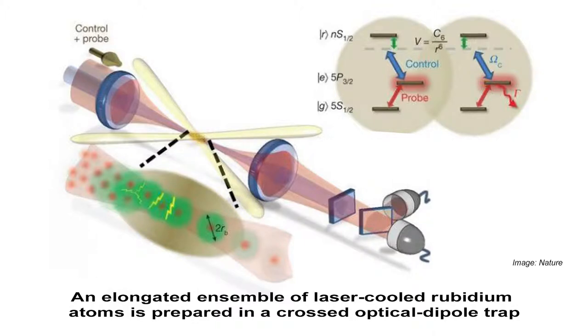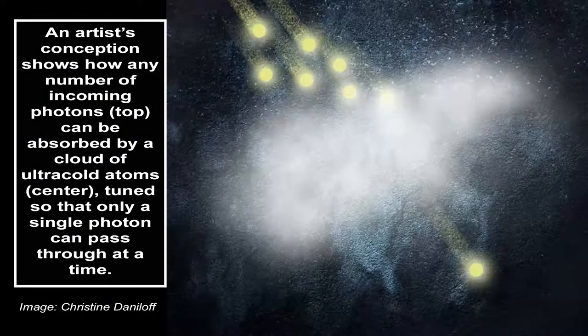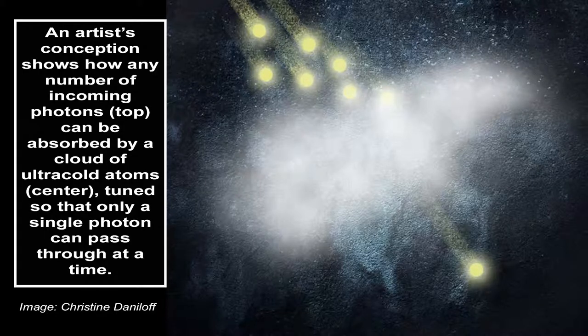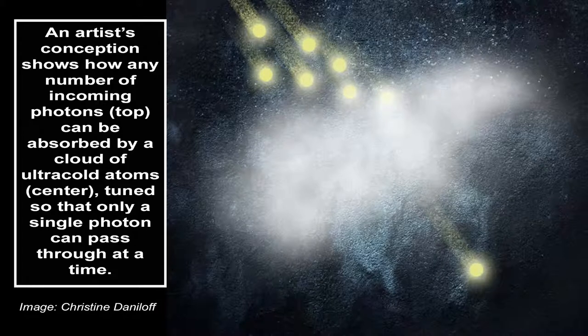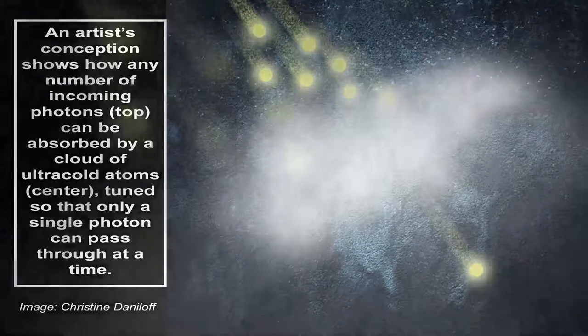For example, a single photon traveling through a cloud of such atoms might pass through easily, but also might change the state of the atom so that the second photon is blocked when it tries to pass through. In the MIT-Harvard system, no matter how many photons are sent into the cloud, only one at a time emerges from it. The cloud acts as a kind of turnstile for photons, forcing the jumbled photons into an orderly succession of individuals.